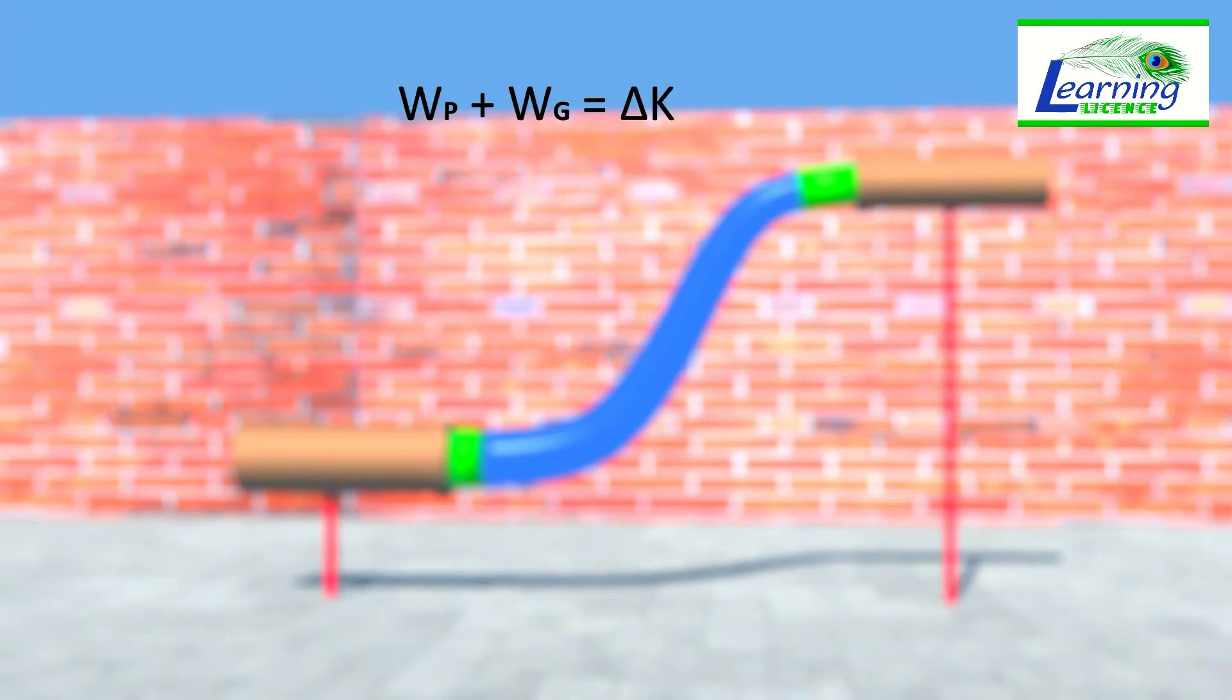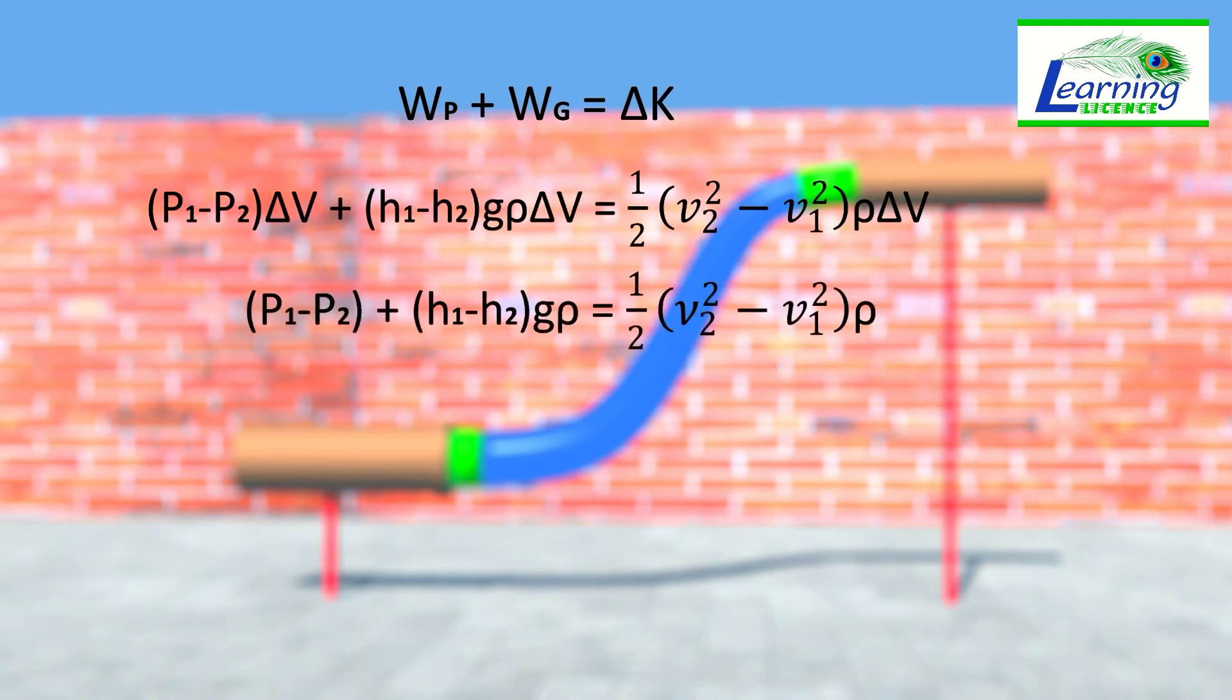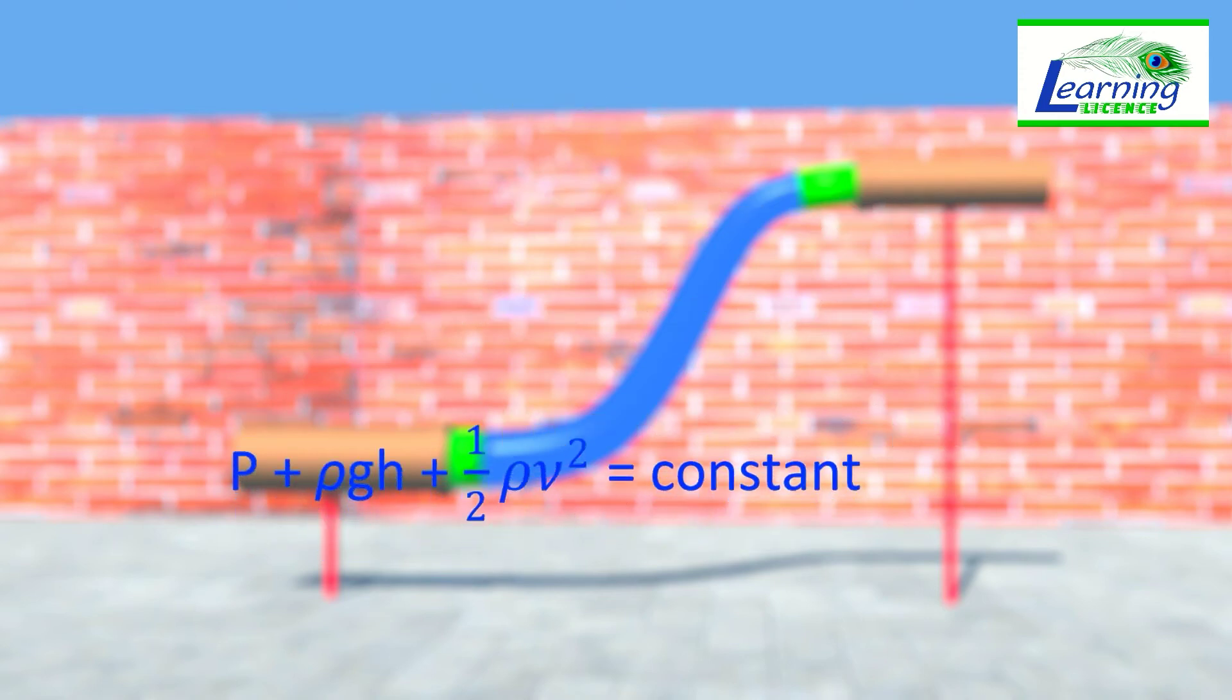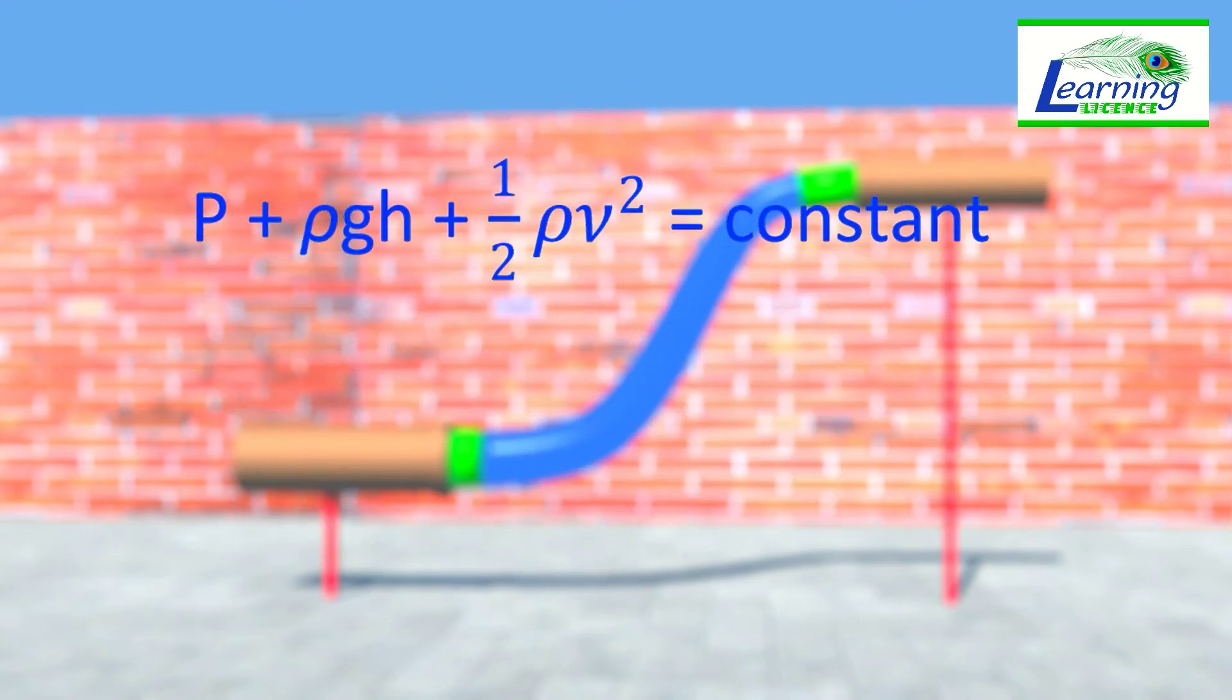Now we have all three terms: WP, WG, and del K. So we put all terms that we have calculated just now one by one in this equation. After dividing by del V and rearranging terms in this equation, we can see that the term P plus rho GH plus half M V square is constant everywhere in the fluid. And this is the so-called Bernoulli equation.